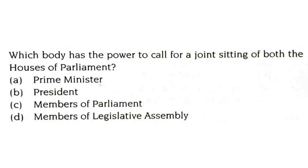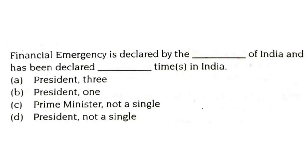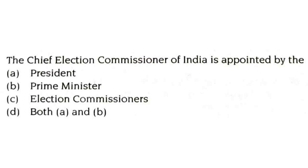Which body has the power to call for a joint seating of both houses of parliament? It is the President of India. Financial emergency is declared by the President of India and has not been declared a single time in India. The Chief Election Commissioner of India is appointed by the President.